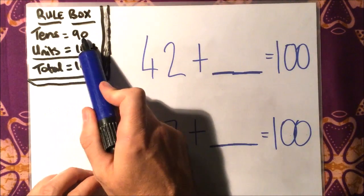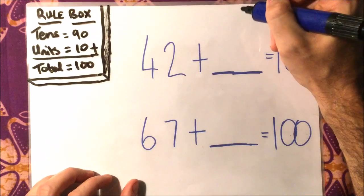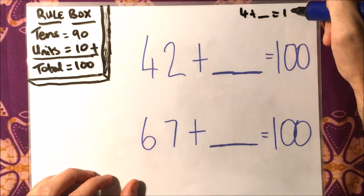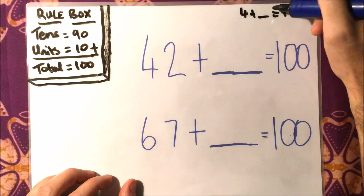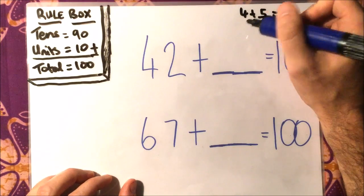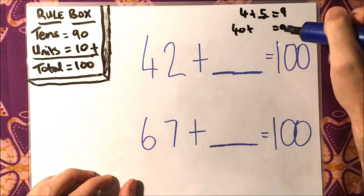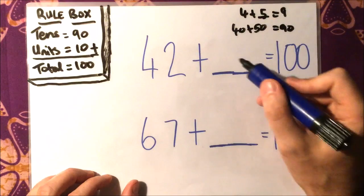So we need to look at the rule box. The tens need to add up to 90, so I think what does 4 add something make 9? What do I need to add to 4 to make 9? I need to add 5. So what do I need to add to 40 to make 90? I need to add 50, so I'm going to put 5 tens, 50, right there.